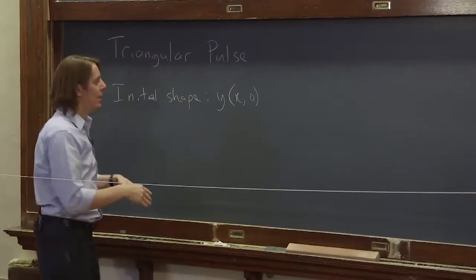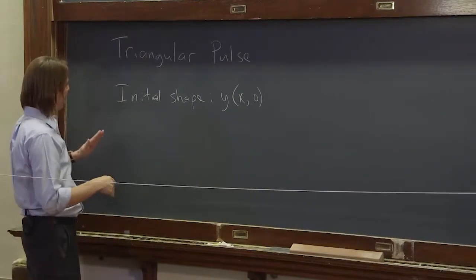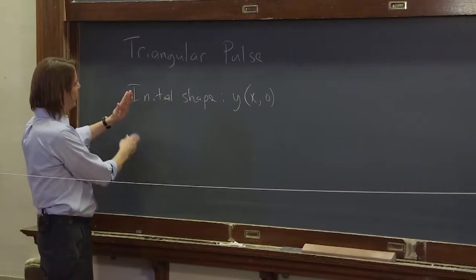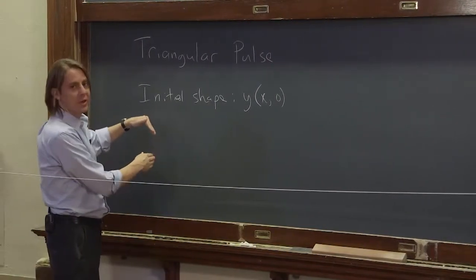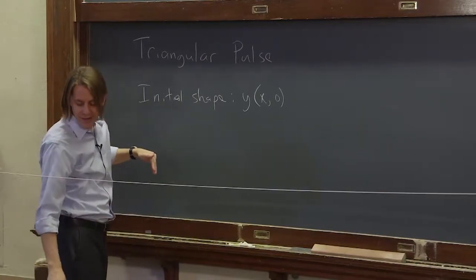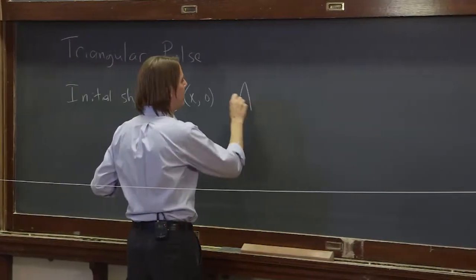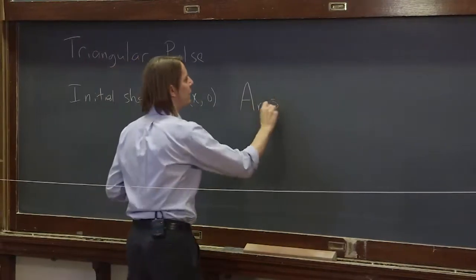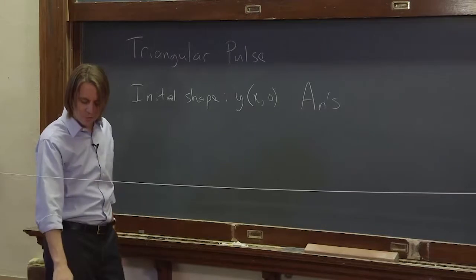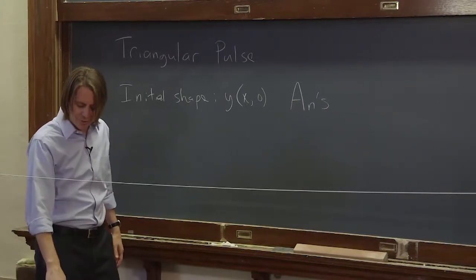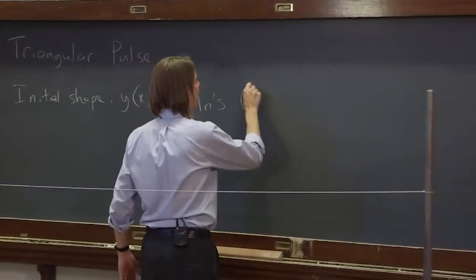We actually did it as a homework problem, or it is an assigned homework problem, where the slope goes up to the distance L over 20, and then it comes down at the same rate of the distance L over 10, and the rest of the string is flat. And I actually gave you the answer for what is the function for the ANs, so you had to solve for AN what set of amplitudes would give you that shape.